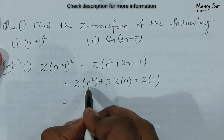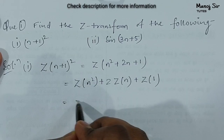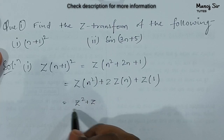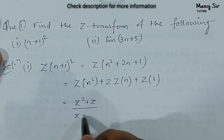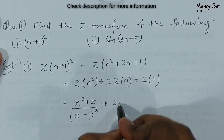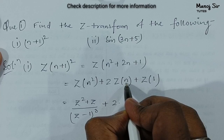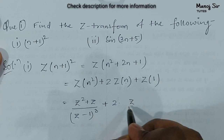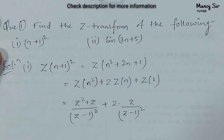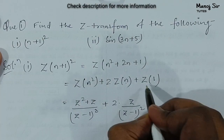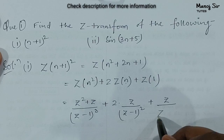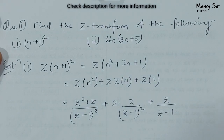Writing out the substitution: Z-transform of n squared is (z²+z)/(z−1)³, then plus 2 into Z-transform of n which is z/(z−1)², and plus Z-transform of 1 which is z/(z−1).